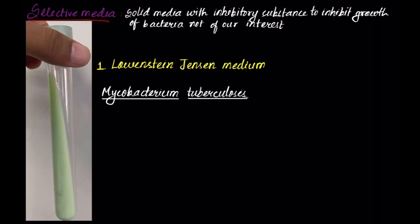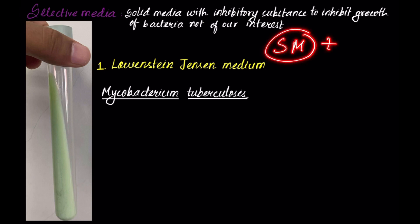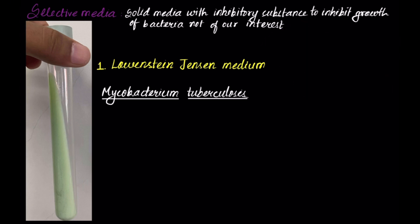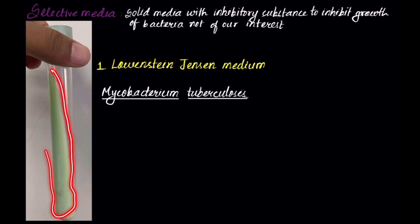Next we have selective media. Selective media is a solid media which contains an inhibitory substance. This inhibitory substance inhibits the growth of bacteria that is not of our interest, so that the growth of bacteria that is of our interest takes place.